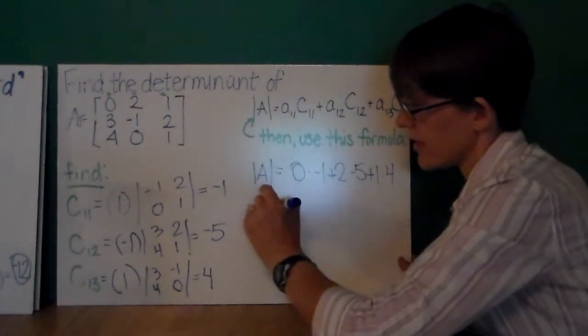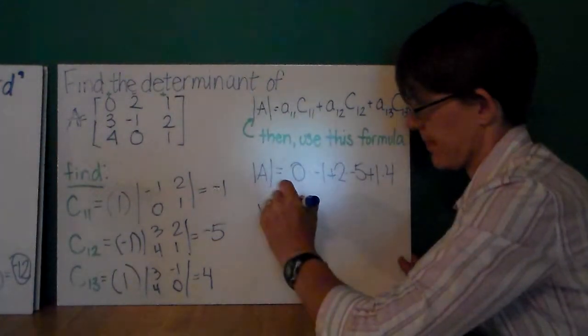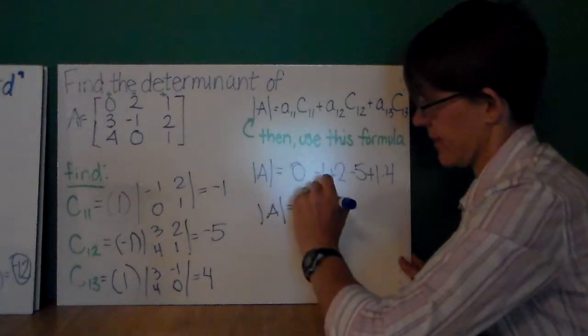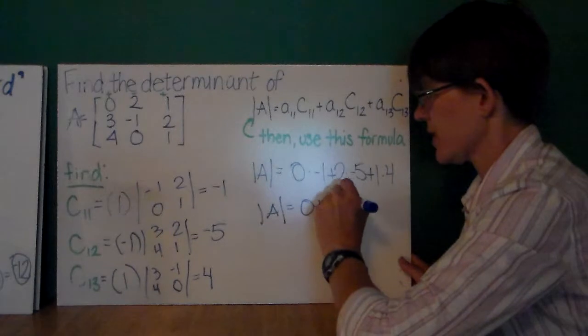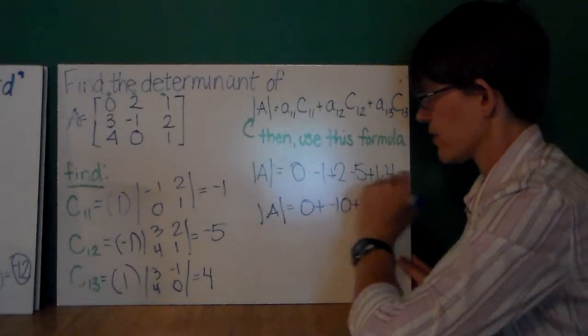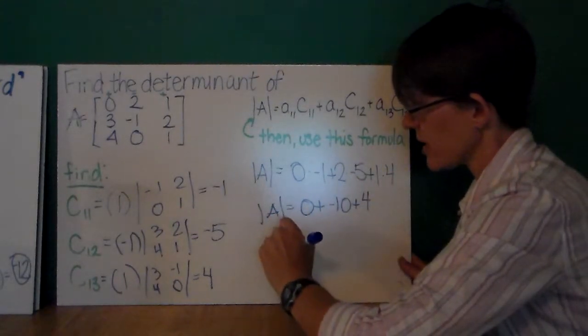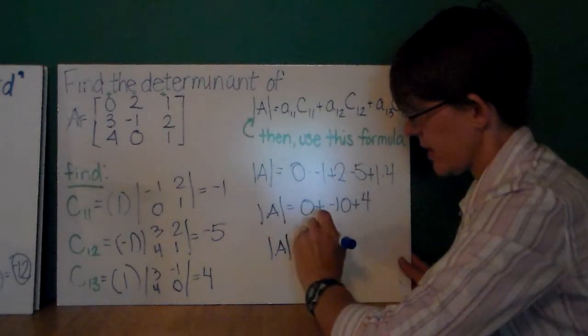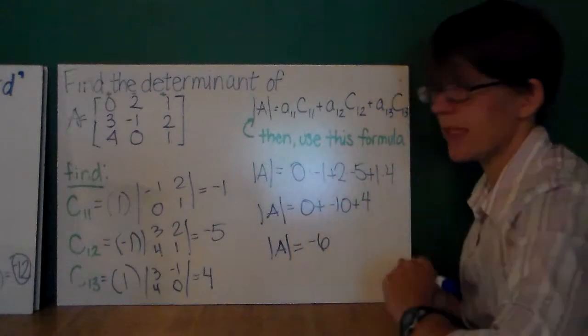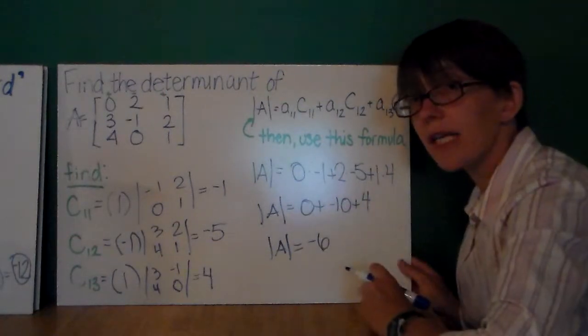So, I have 0 times negative 1. Well, that is 0. 2 times negative 5 is negative 10. And, 1 times 4 is 4. So, my determinant is negative 6. So, that's how you calculate the determinant.